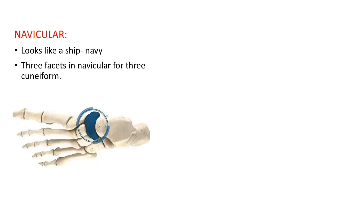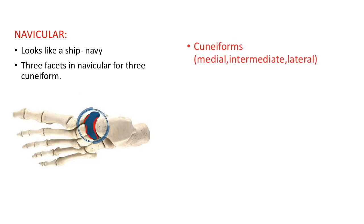The next bone is the navicular bone. Its name comes from its shape resembling a navy vessel. It has three facets anteriorly which articulate with the cuneiform bones. Posteriorly it articulates with the head of the talus — its articulating surface is concave while the head of the talus is convex. We have three cuneiform bones — medial, intermediate, and lateral — and the most lateral tarsal bone is the cuboid.